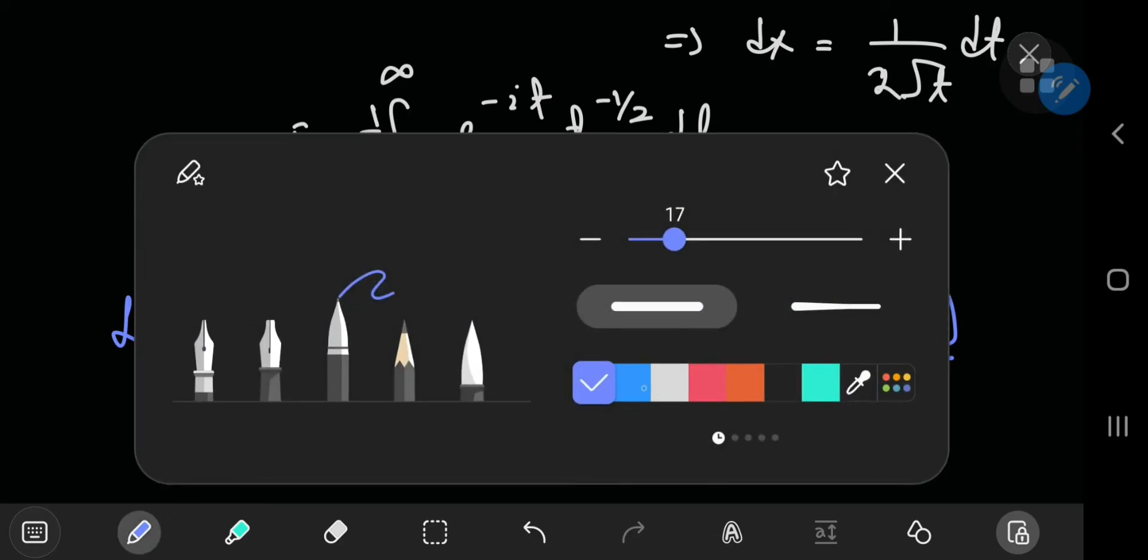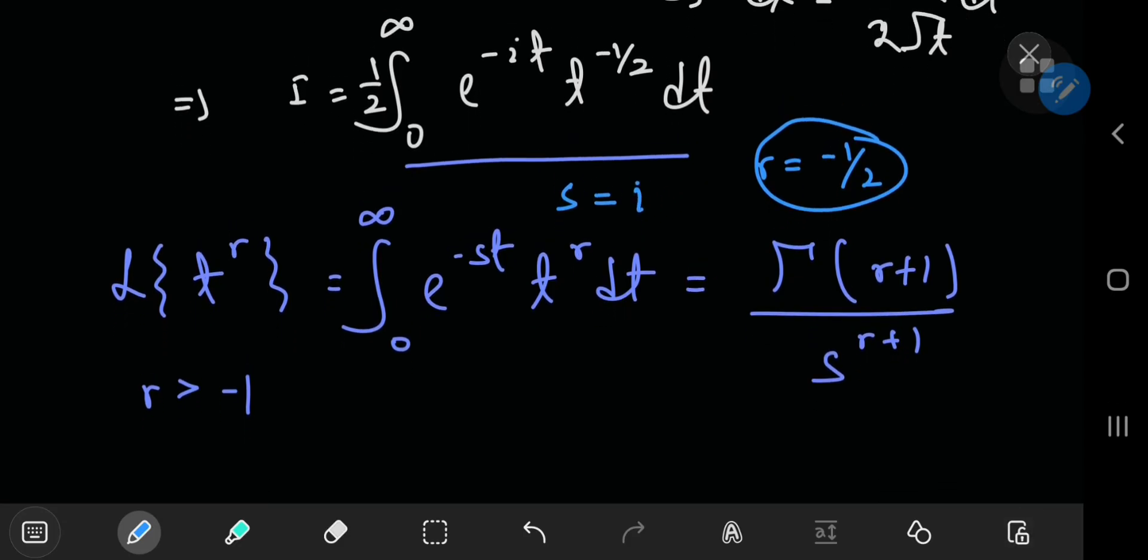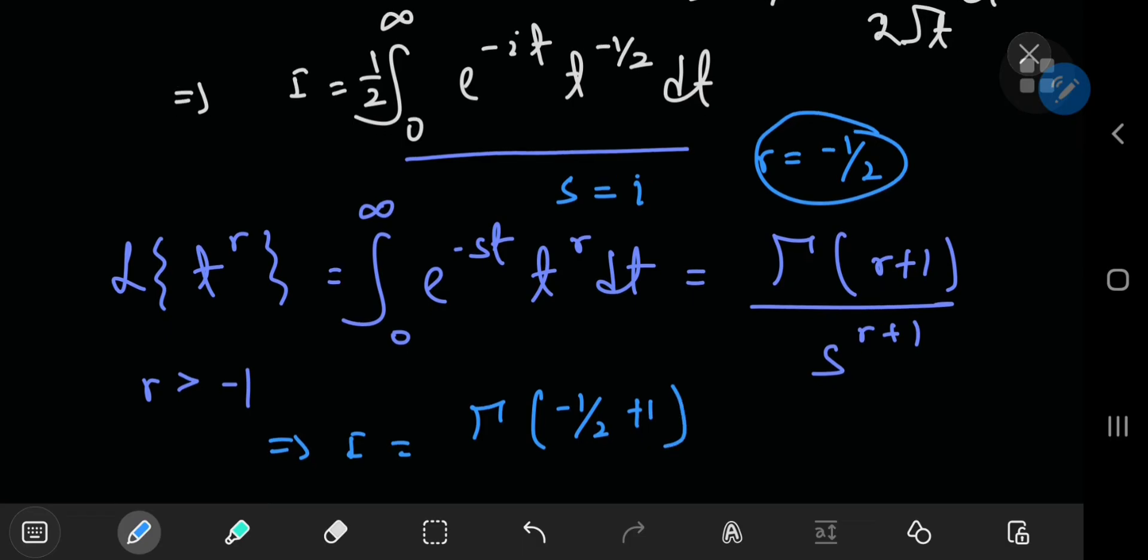So all that's left to do here is note that r equals negative one by two, and you can replace s by i. So in that case, this implies that our integral equals gamma of negative one by two plus one divided by i to the negative one by two plus one.